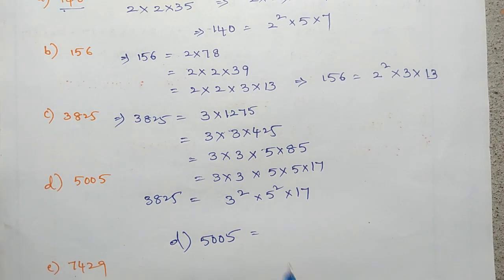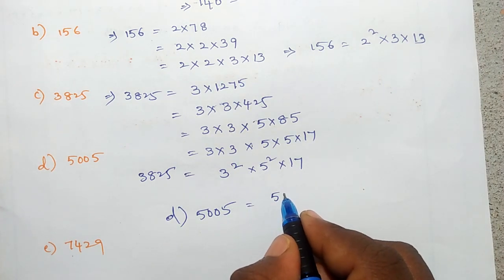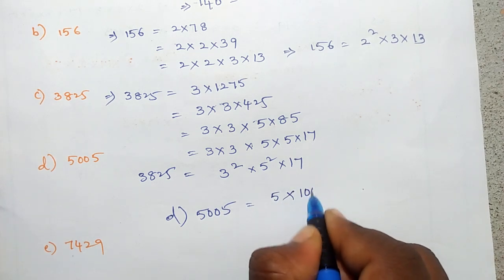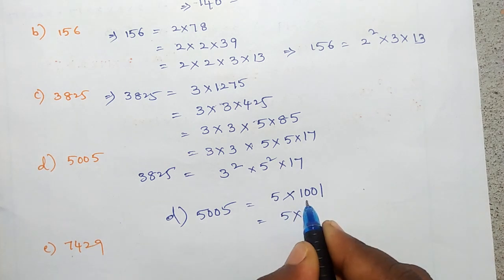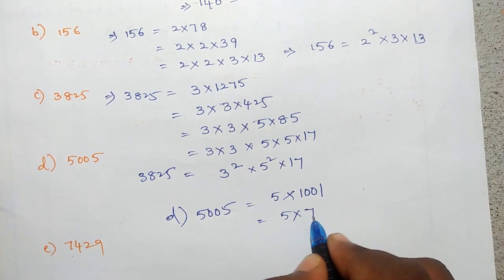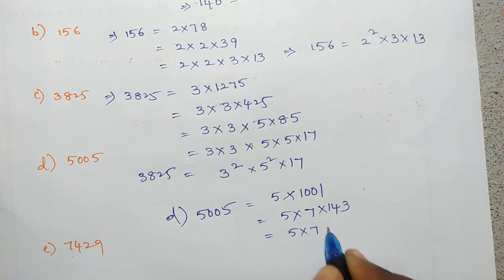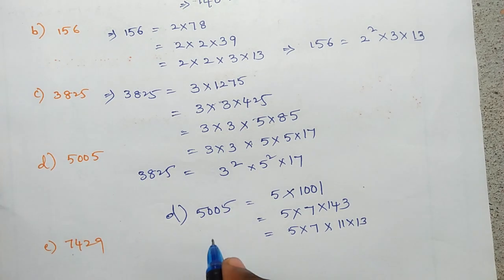Next, problem D: 5005. This is divisible by 5, so 5 into 1001. Then 1001 is divisible by 7, giving 7 into 143. Then 143 can be written as 11 into 13. So 5005 is equal to 5 into 7 into 11 into 13.